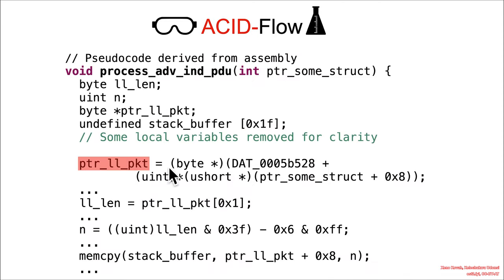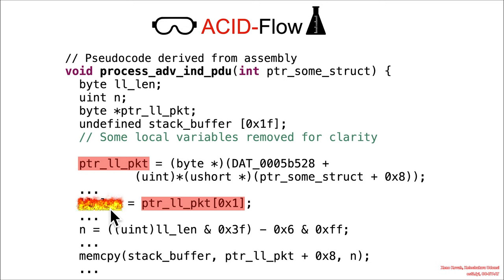So, attacker-controlled low-level packet — link layer packet. That's attacker-controlled, which means this is attacker-controlled and corrupts the ll_length. And you have to remember which section you're in here, because we've got that — and sure, we've got acid math — but we are in the other integers section.